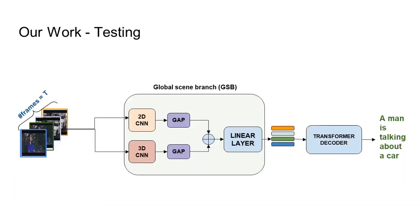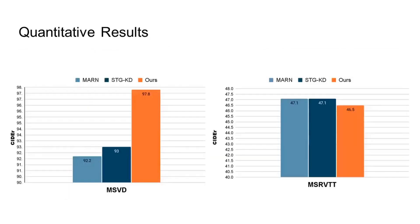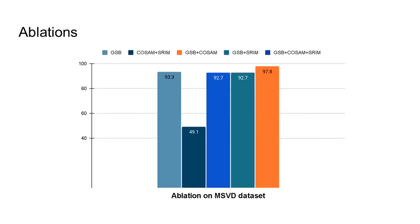We use only the global branch while testing. We evaluate our results on two benchmark datasets, MSVD and MSRVTT. In terms of CIDEr score, we achieve state-of-the-art performance on the MSVD dataset by a large margin and get competitive results on MSRVTT. We perform several ablation studies and observe that adding the CoSAM and SRIM modules to the global scene branch improves performance significantly.